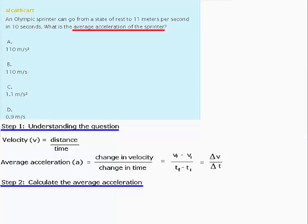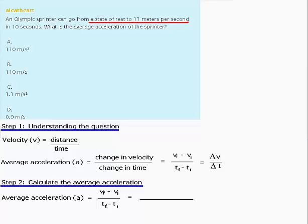Given what we just learned, we know that the average acceleration is equal to the difference between the initial and final velocity, divided by the difference between the initial and final time. The question tells us that the Olympic sprinter can go from a state of rest to 11 meters per second.